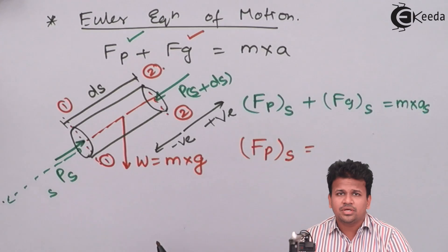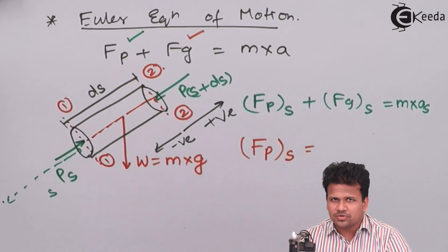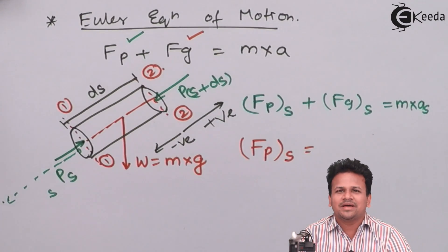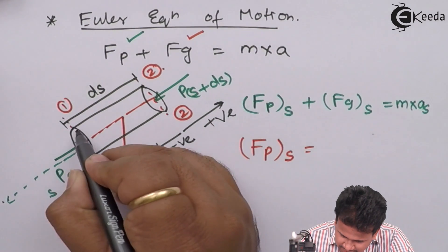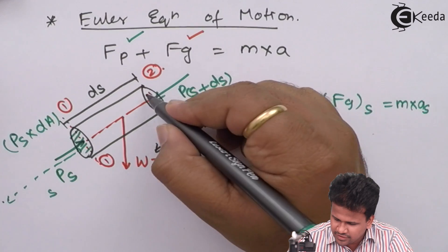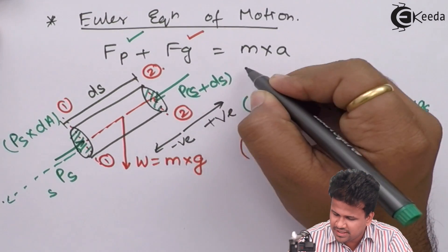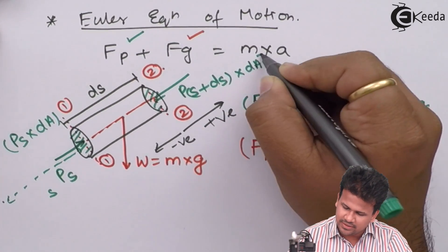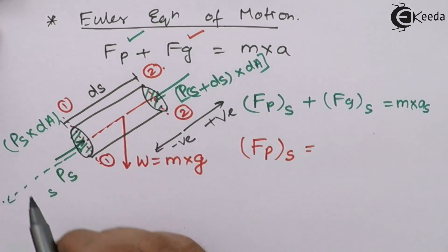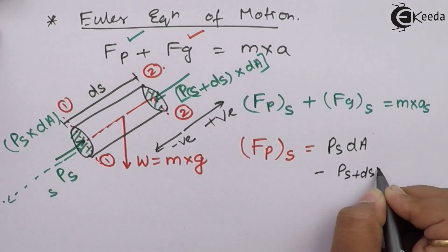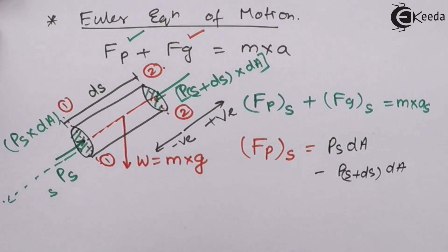Here we are talking about the force, not about the pressure. Hence force is related to pressure by multiplying by its cross-sectional area. So the force acting on section 1-1 will be given as P_S into dA, and the force acting on section 2-2 will be given as P_S_plus_dS into dA. The net force along the pressure direction is P_S·dA minus (P_S + dS)·dA.